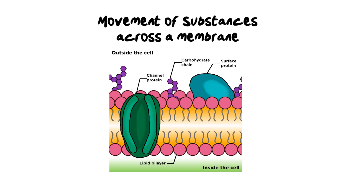Cell membranes are differentially permeable, which essentially means they can tell the difference between the substances that are trying to move through them. Our cell membrane has a lipid bilayer made out of hydrophobic and hydrophilic components — in other words, components that attract water and also repel it.